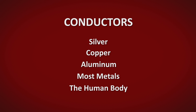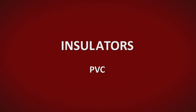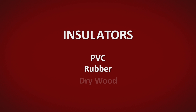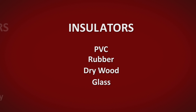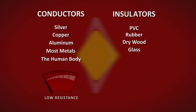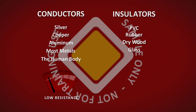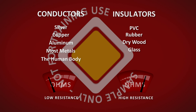Electricity will not travel easily through materials we call insulators. Good examples of insulators include PVC, rubber, dry wood, and glass. Appropriate insulators, which form parts of electrical installations, for all intents and purposes, stop the flow of electricity. Good conductors are said to have a low resistance to electrical flow, and good insulators have a high resistance. This resistance is measured in ohms.